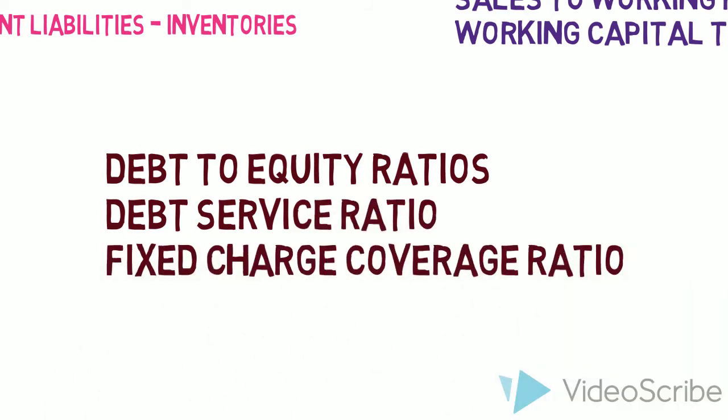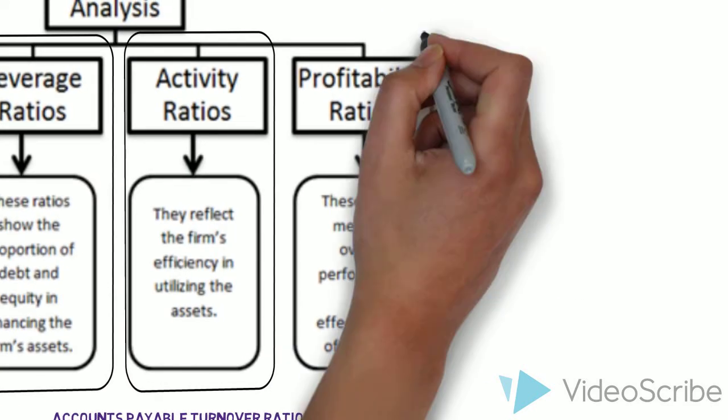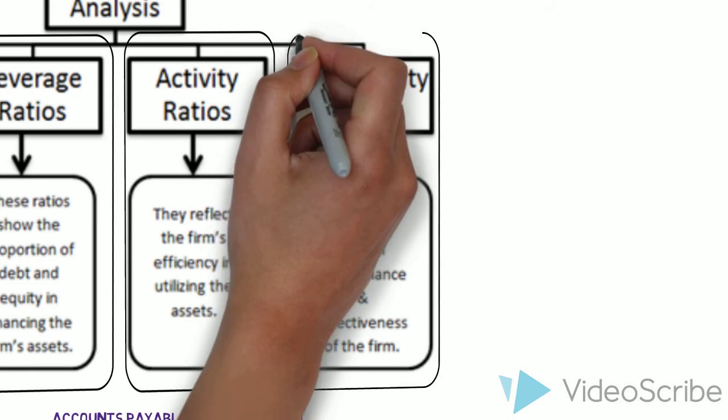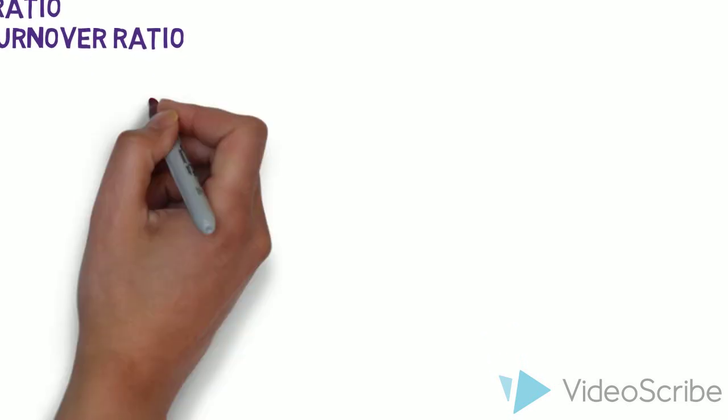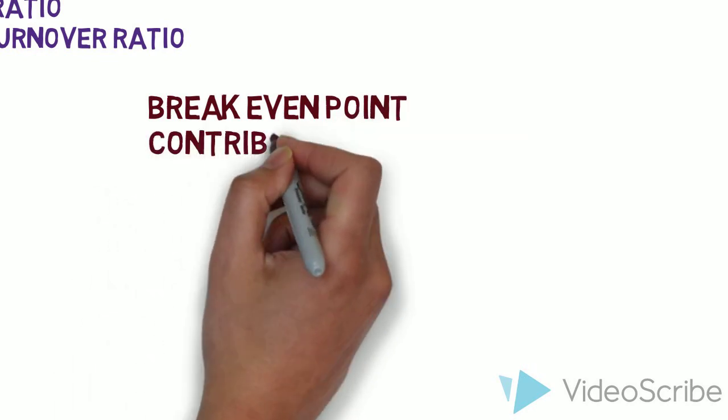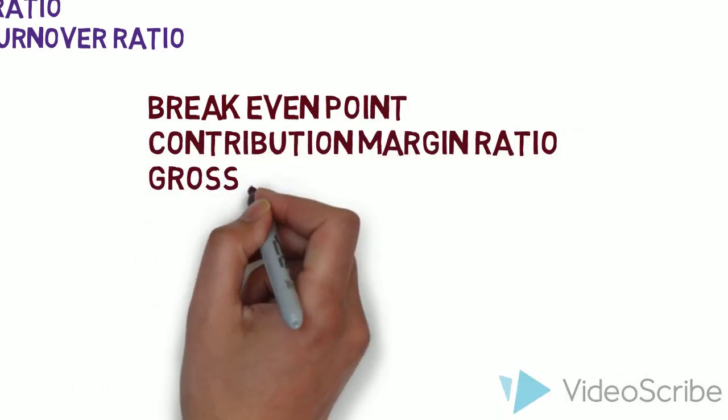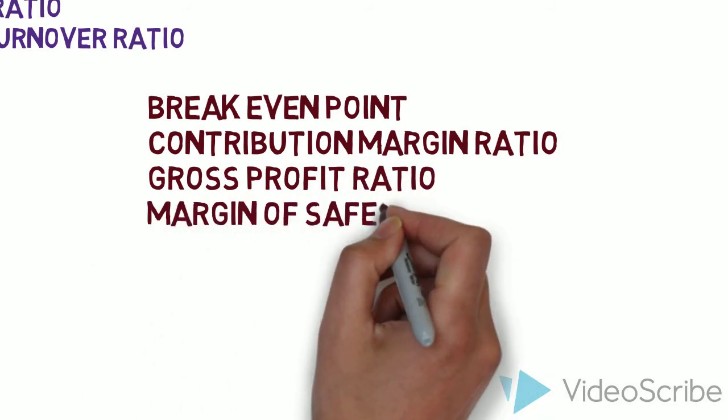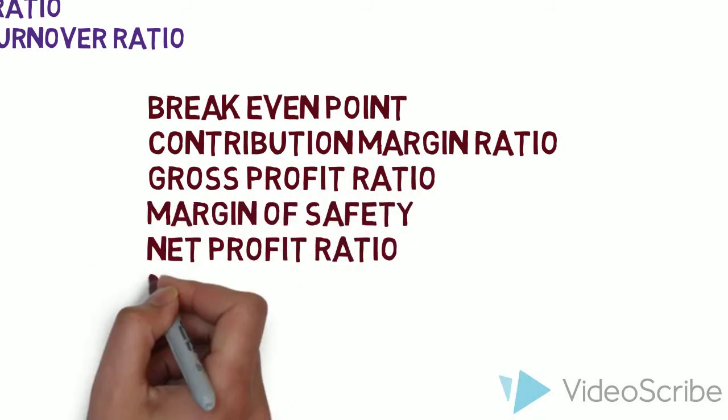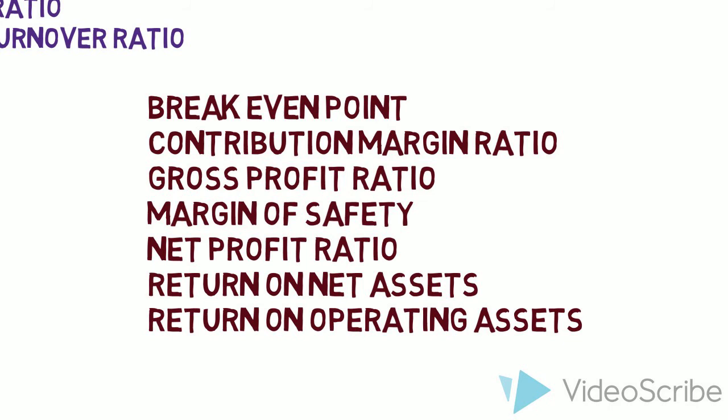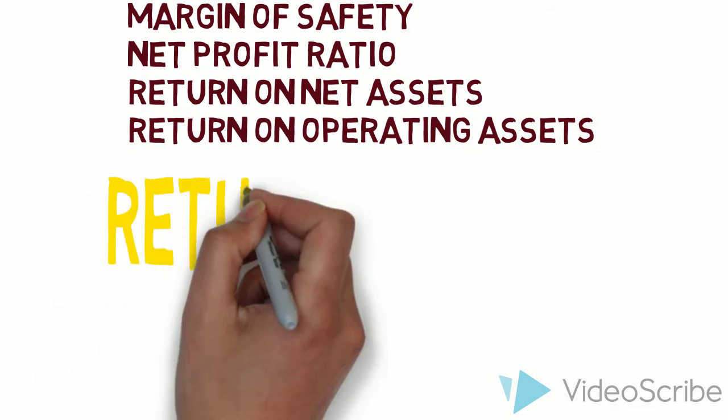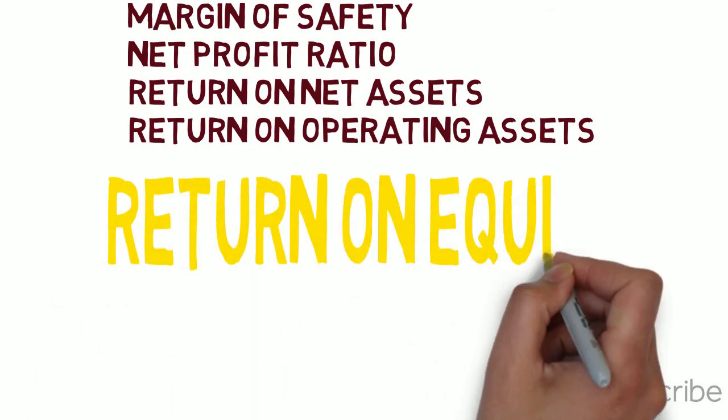Four: Profitability ratios. These ratios measure how well a company performs in generating a profit. These include: A - break-even point, B - contribution margin ratio, C - gross profit ratio, D - margin of safety, E - net profit ratio, F - return on net assets, G - return on operating assets, and the best ratio is H - return on equity.